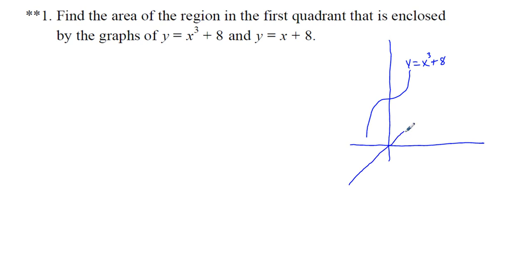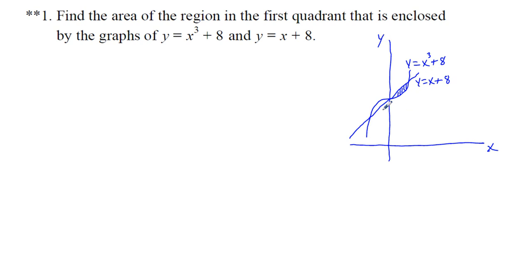And we have y equals x plus 8. We've got our x and y coordinate axes. We're interested in the first quadrant — this hashed-in piece here. The upper function is going to be this linear function, so we're going to call this f of x. And we're going to call y equals x cubed plus 8 our g of x. Now we need to find the limits of integration. We already know that we have 0, so we're going to set these two functions equal to each other.